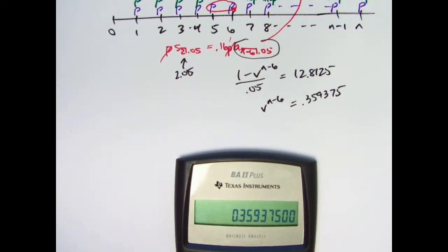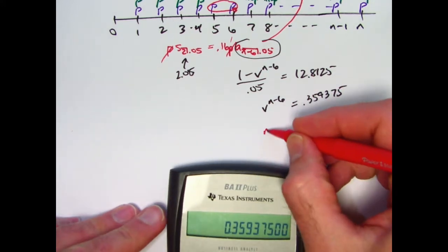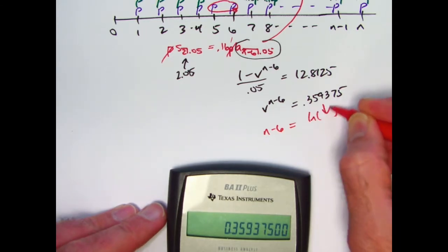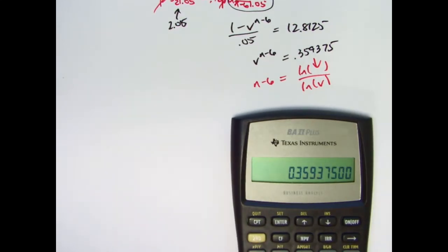Take the log of both sides. Use the property of logs that the n minus 6 can come down in front. You could say n minus 6 is the natural log of this thing over the natural log of v. The natural log of this thing is negative 1.02338887.